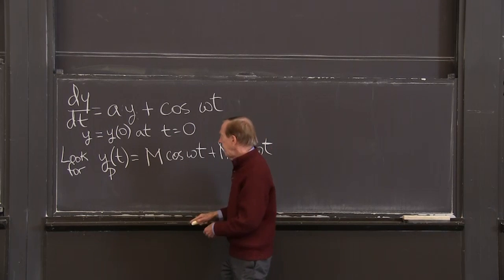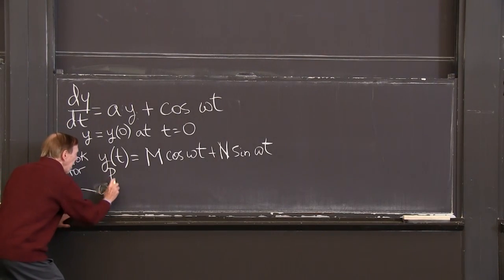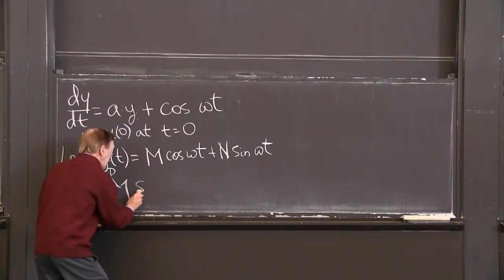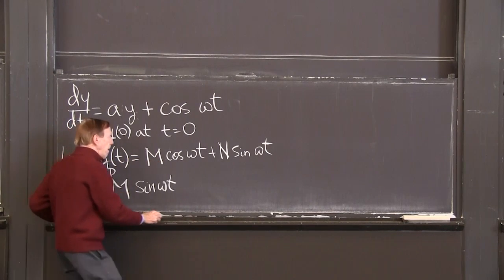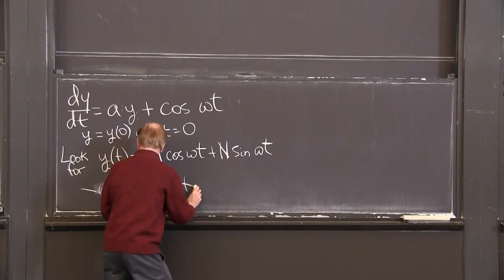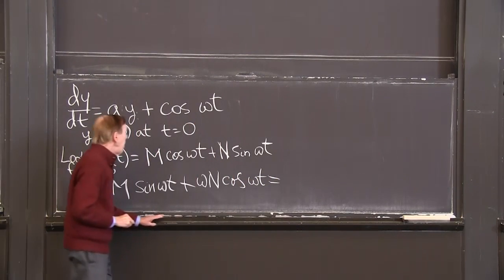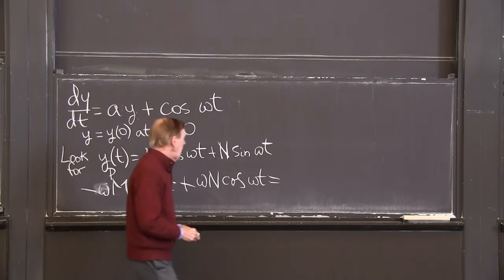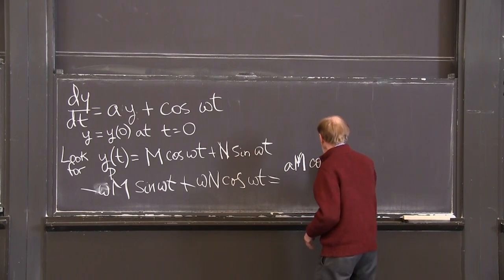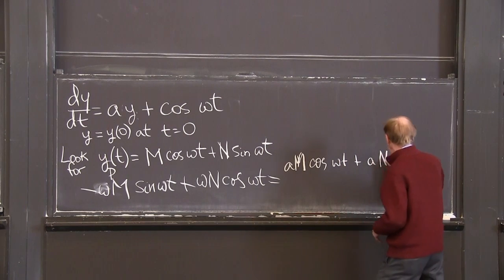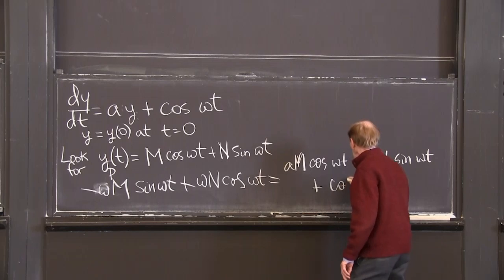Put that into the equation. On the left side, I want the derivative. The derivative of the cosine gives minus omega m sine omega t — the derivative brought out this factor omega. The derivative of sine brings out a factor of omega n cosine omega t. And that should equal a times y, so I get a m cosine omega t and a n sine omega t. That's the a·y part. And now I have the source term plus cosine omega t, and that has to be true for all time.